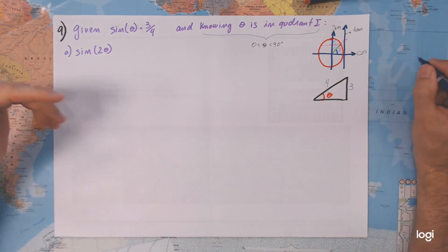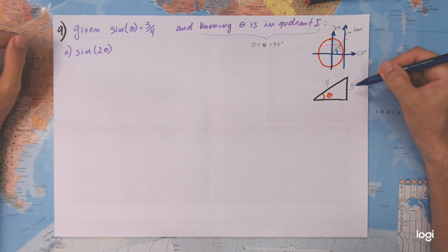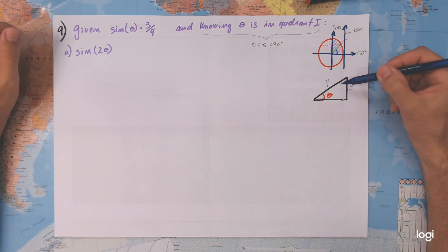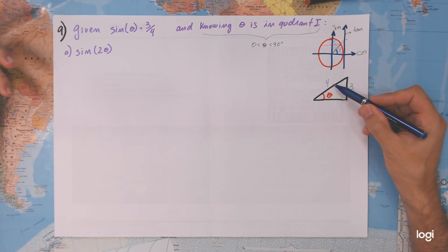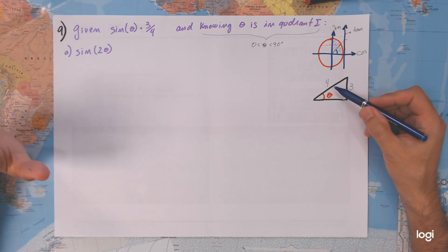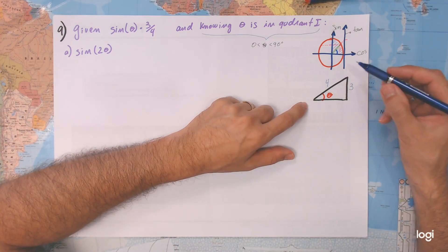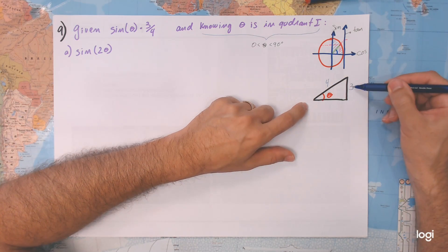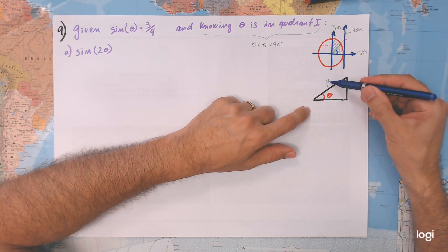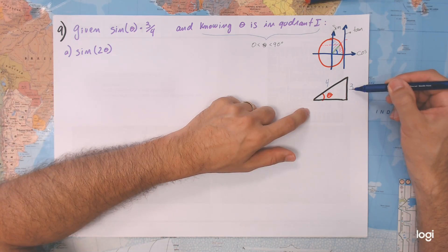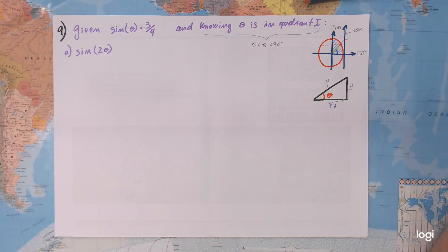Now, somebody might remember this is the magical 3-4-5 triangle — no, it can't be. Why? Because in a 3-4-5 triangle, 5 must be the hypotenuse, but the hypotenuse here is 4, so this is not a 3-4-5 triangle. Let's use Pythagoras: 4 squared equals 9 plus the missing side squared. So we have 16 equals 9, meaning the missing side must be the square root of 7.